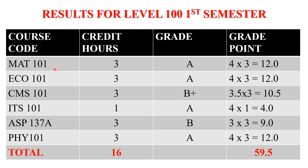MATH 101 is a 3 credit hour course, ECO 101 is a 3 credit hour course, CMS 101 is a 3 credit hour course, ITS 101 is a 1 credit hour course, ASP 137A is a 3 credit hour course, and PHY 101 is also a 3 credit hour course. Under the grade column: MATH 101 — grade A; ECO 101 — grade A; CMS 101 — grade B+; ITS 101 — grade A; ASP 137A — grade B; PHY 101 — grade A. Now we want to find the grade point.